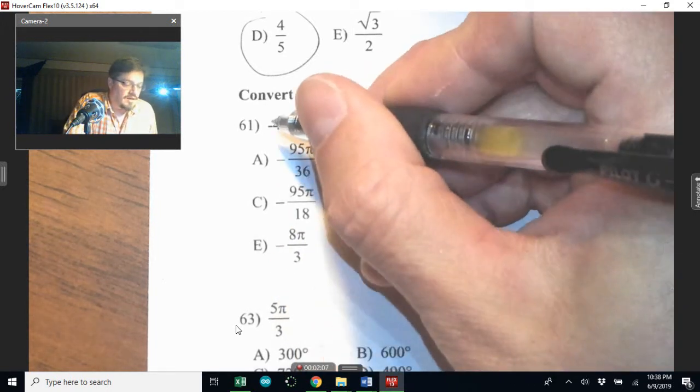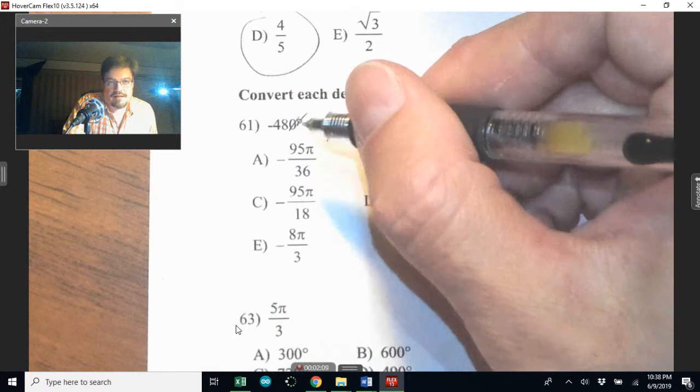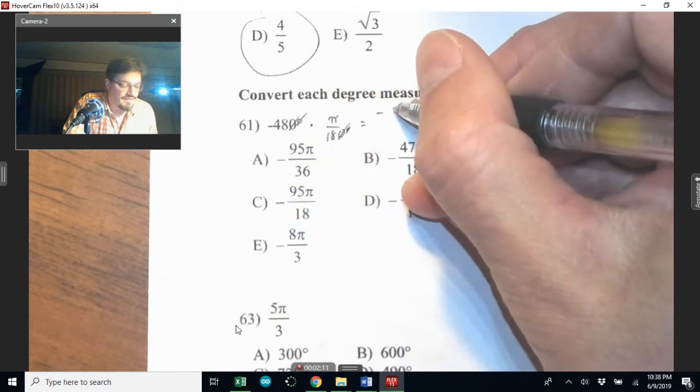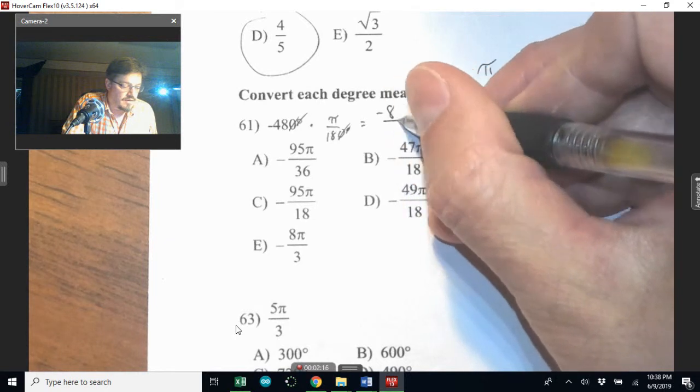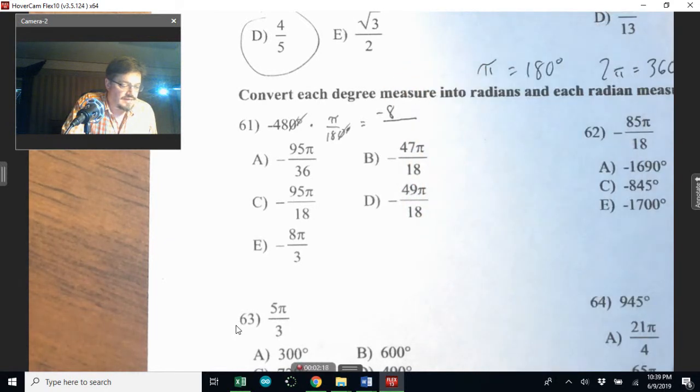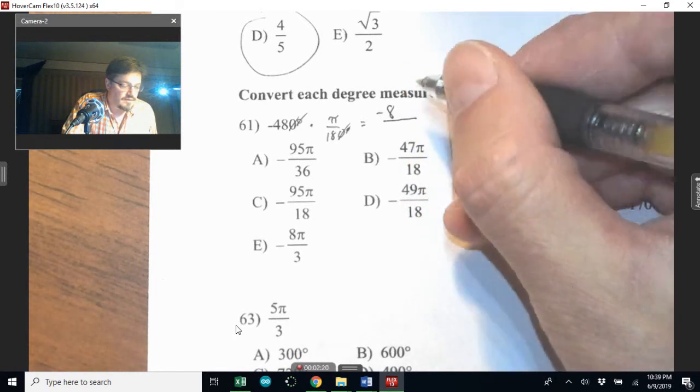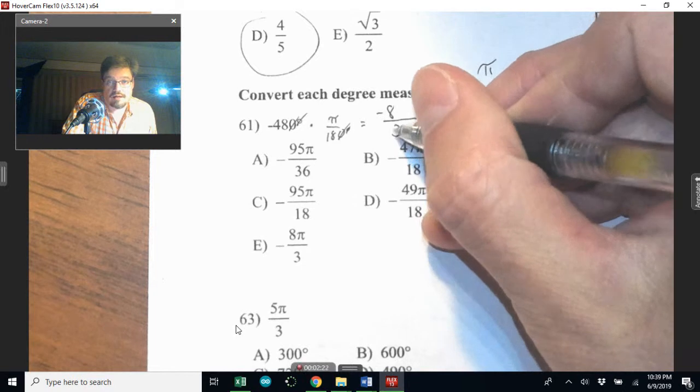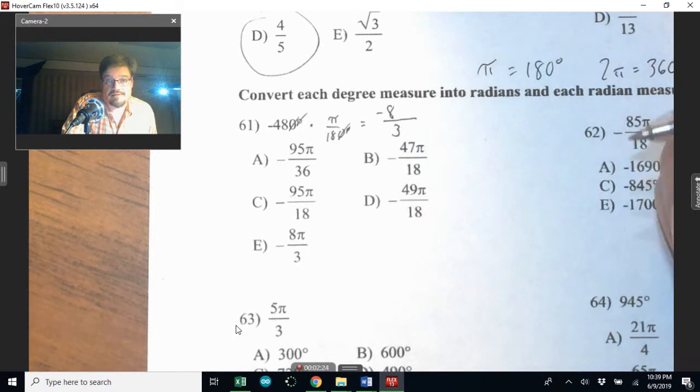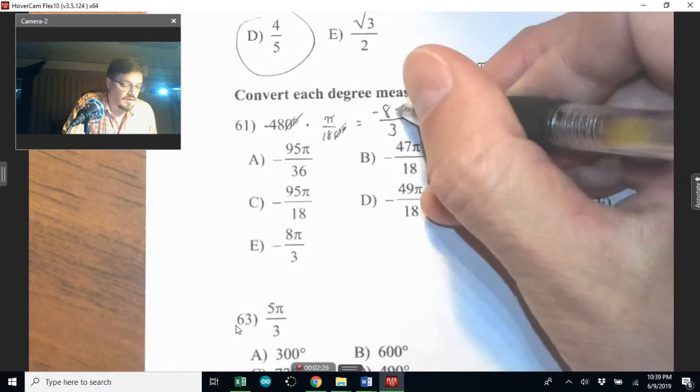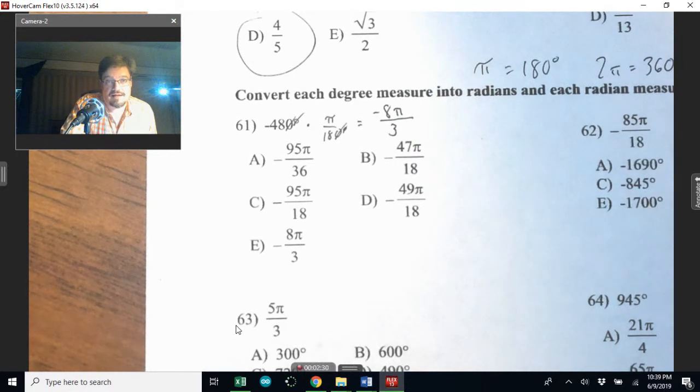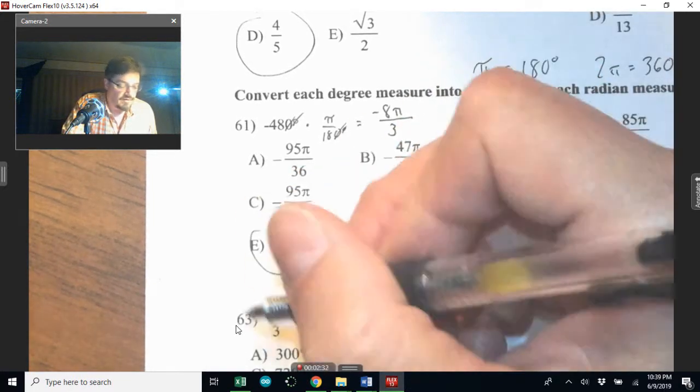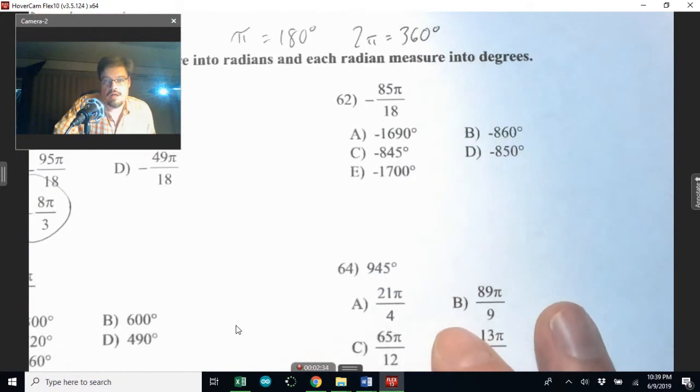Negative 48 divided by 6 is negative 8. And 18 divided by 6 is 3. So the pi is still there, and that's it. It's this guy right here, negative 8 pi over 3.